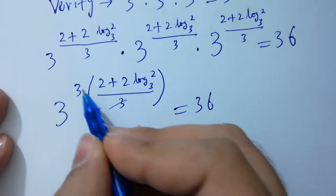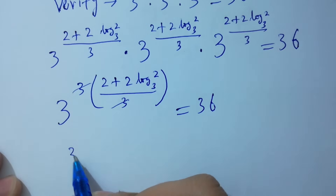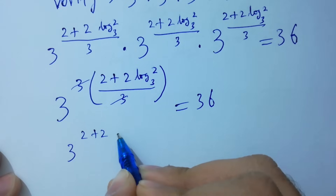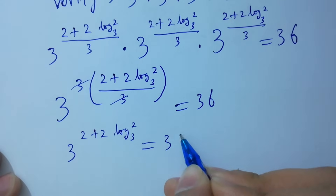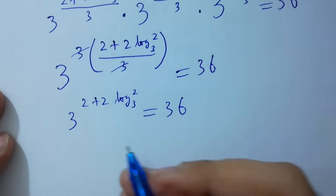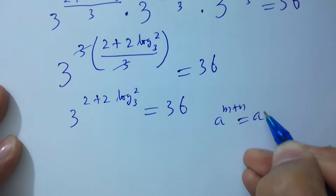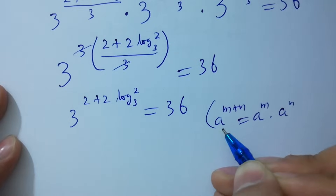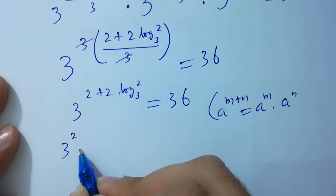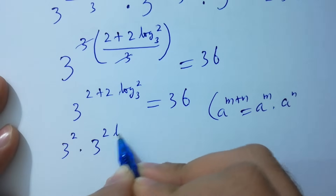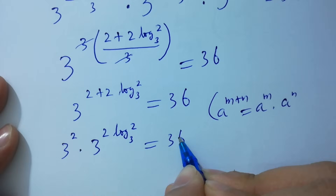The 3s cancel, leaving 3 to the power (2 plus 2 log₃2) equals 36. As A to the power M plus N equals A to the power M times A to the power N, we get 3 to the power 2 times 3 to the power 2 log₃2 equals 36.